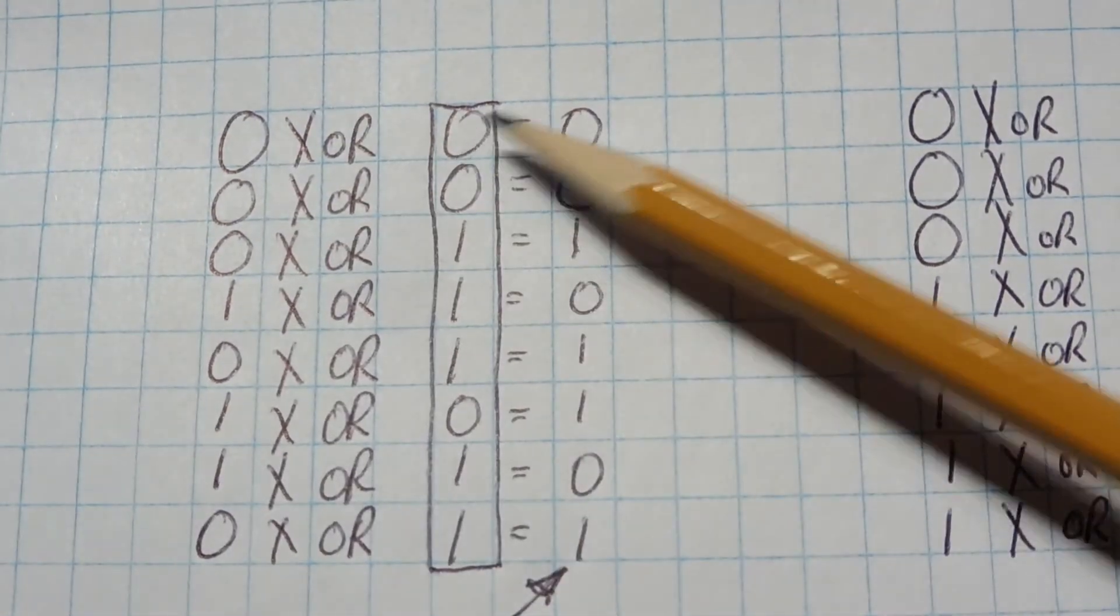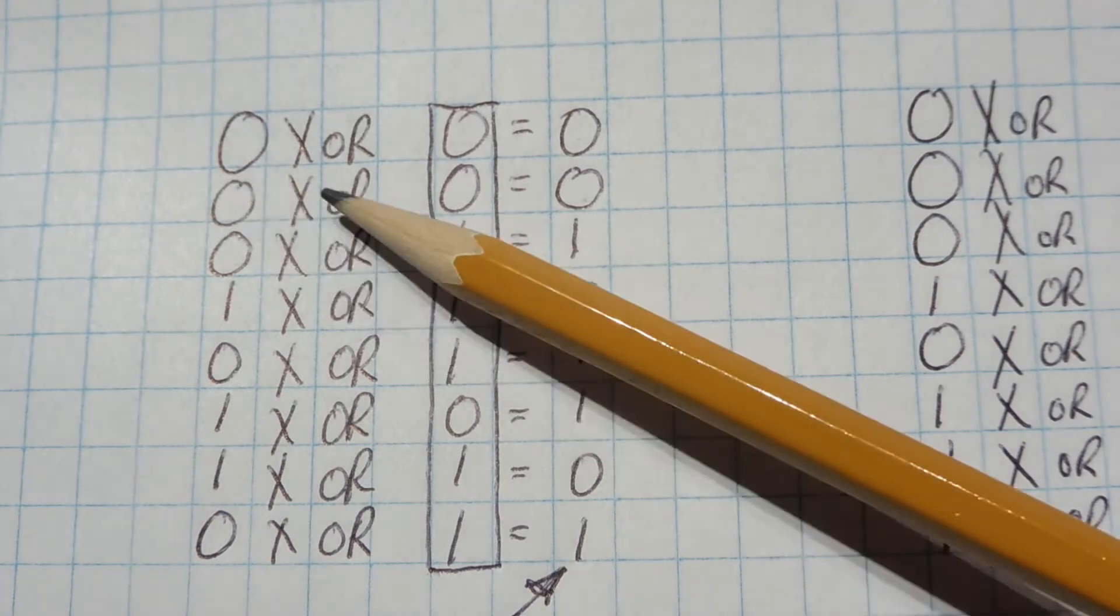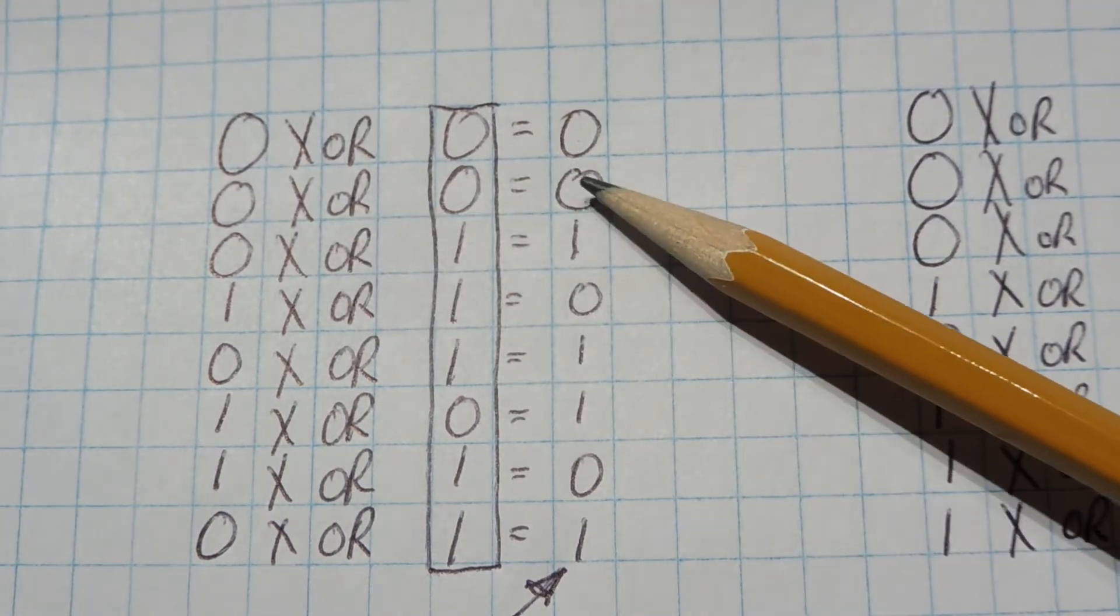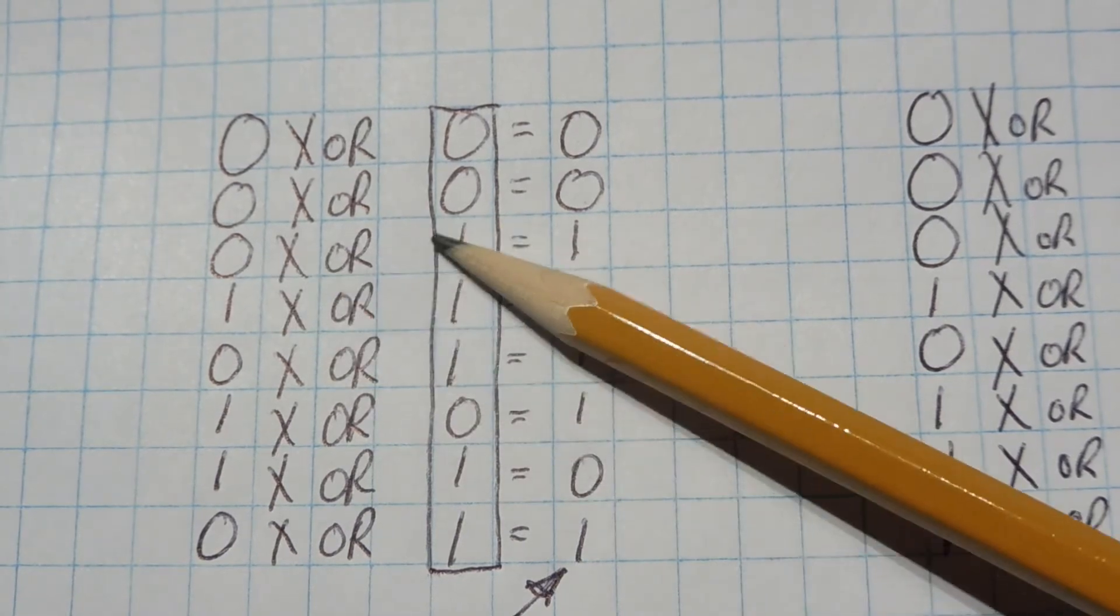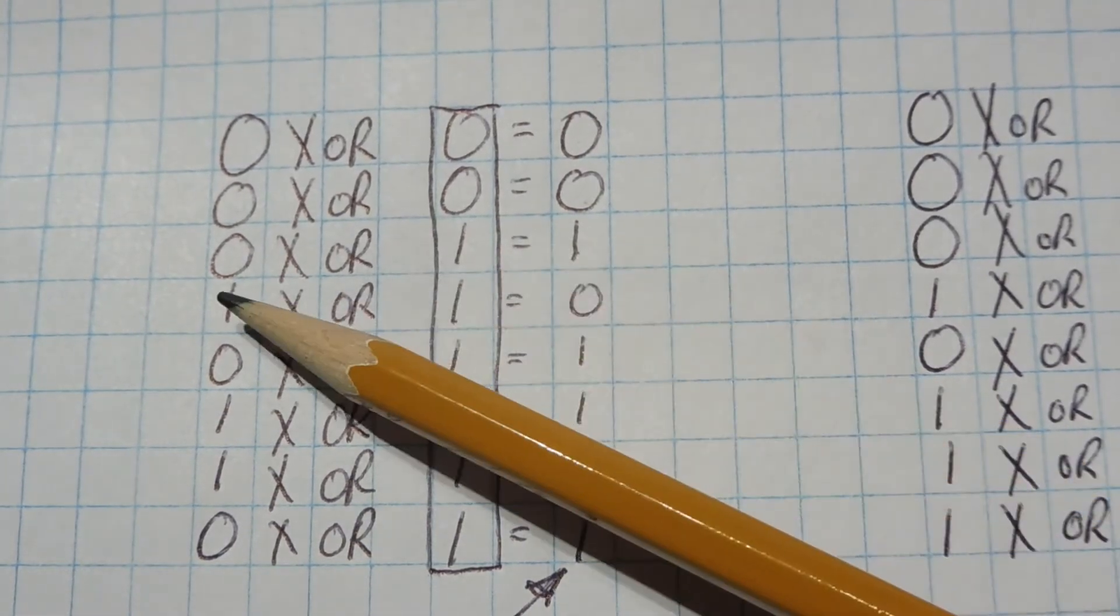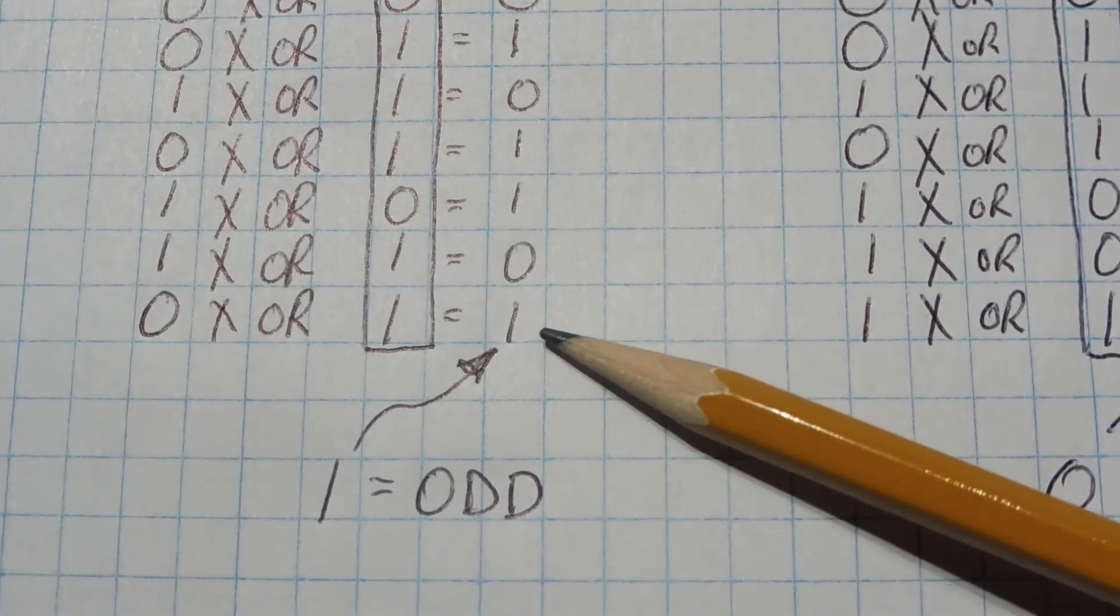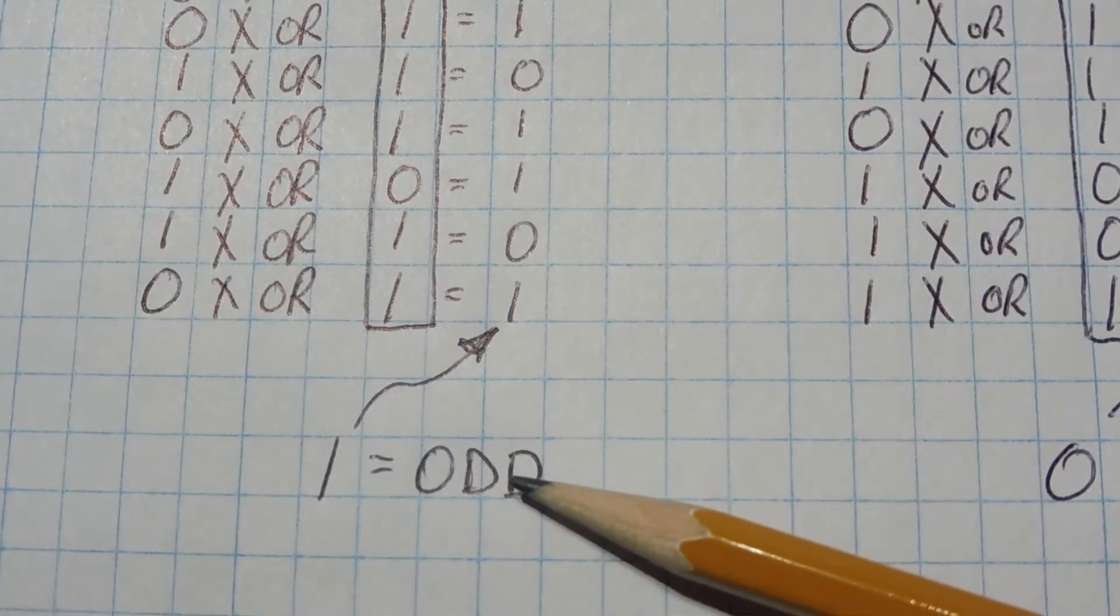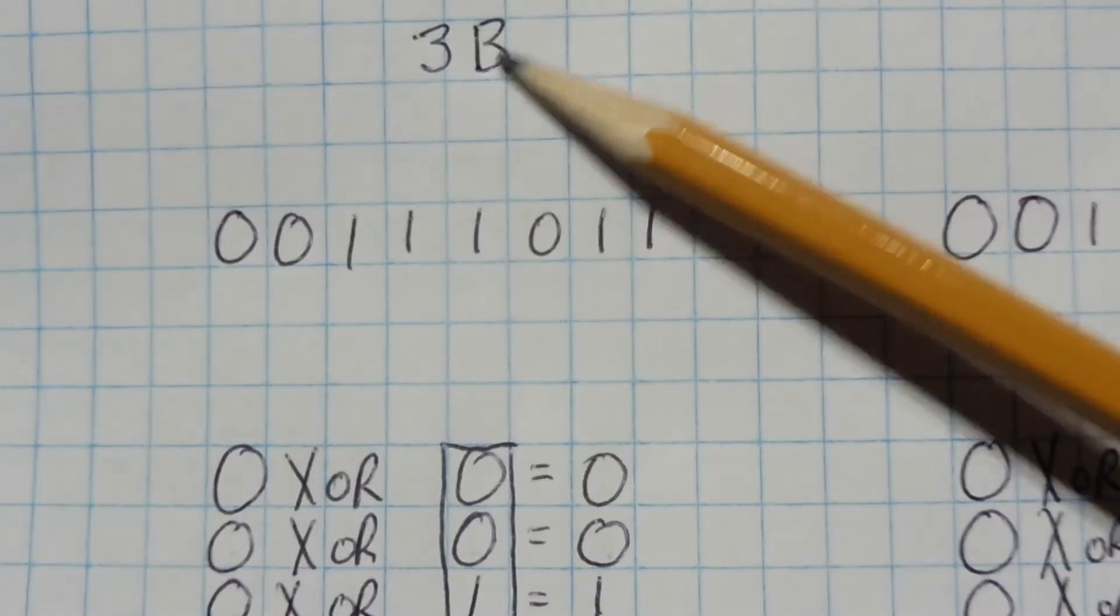And 0 exclusive OR with 0 equals 0. Now we take that value and we put it over here. So 0 exclusive OR with 0 equals 0. And we take that value and we put it over here. 0 XOR 1 equals 1. And we put that value over here. We keep on doing that until we come to the very end. And the last bit equals 1, so it's odd. So it works out as an odd number of ones in the value 3B.